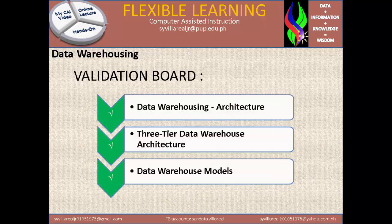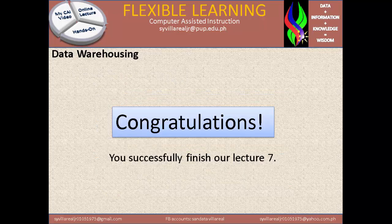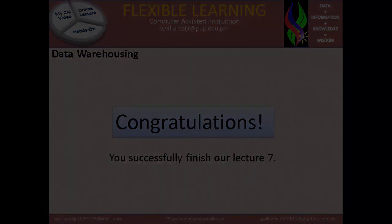So the three topics we covered were: Data Warehousing Architecture, the Three-Tier Architecture, and the Data Warehouse Models. Congratulations! You have successfully finished lecture number seven. Thank you and good luck.